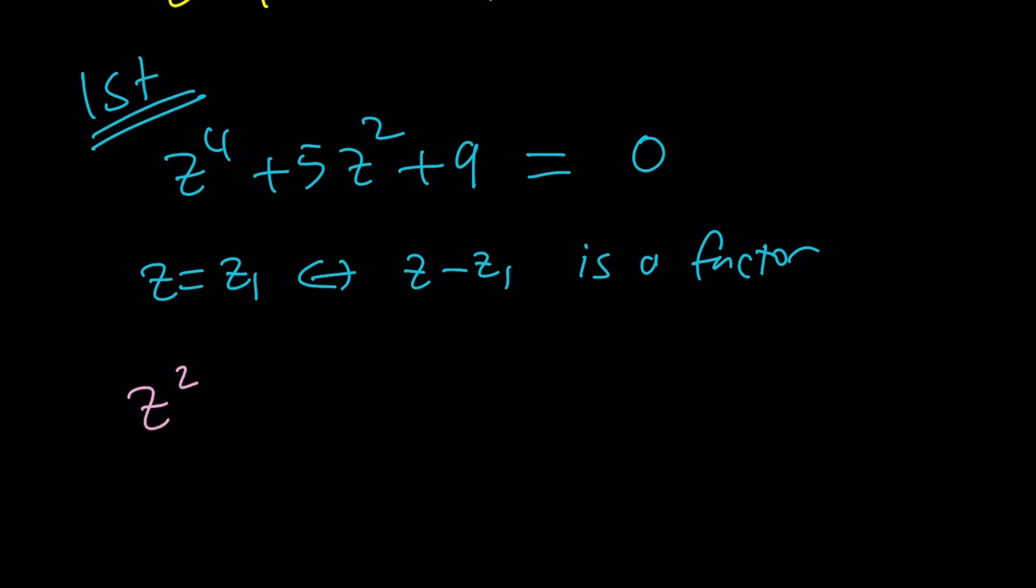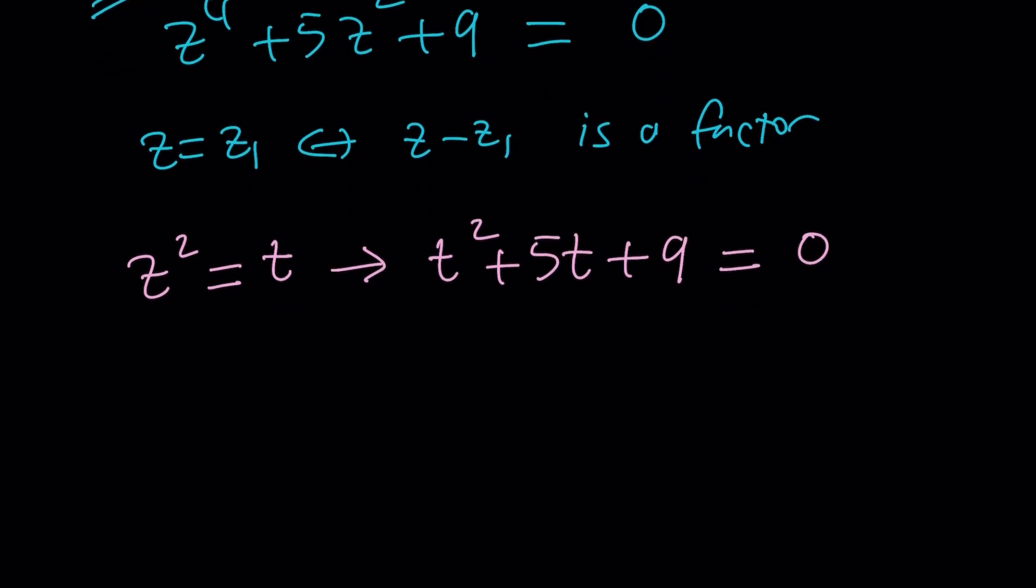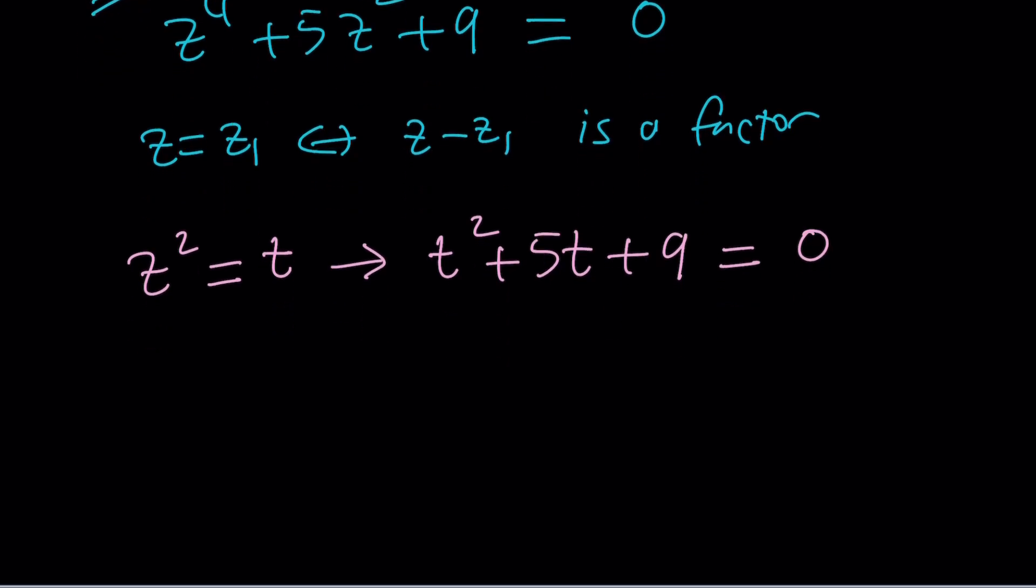We're going to set z squared equal to another variable, t. This gives us t squared plus 5t plus 9 equals 0. To solve this equation, we can complete the square or use the quadratic formula. Quadratic formula is more straightforward, let's use it.